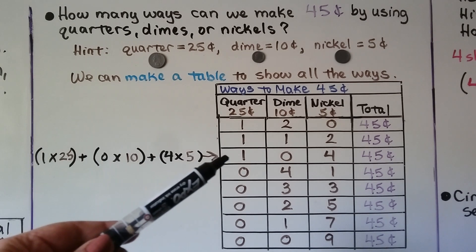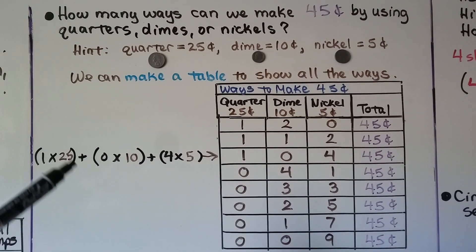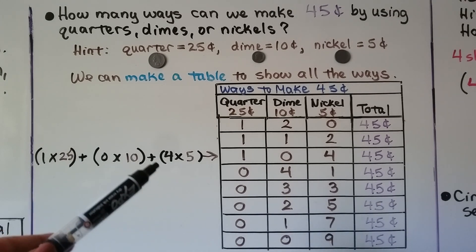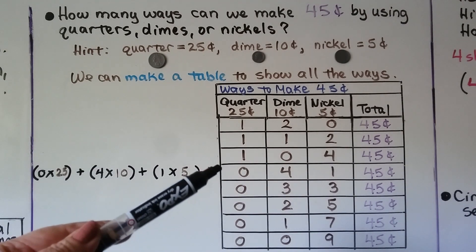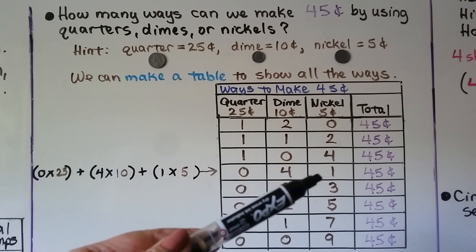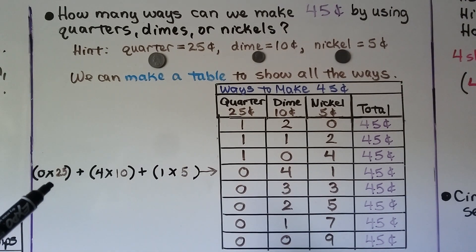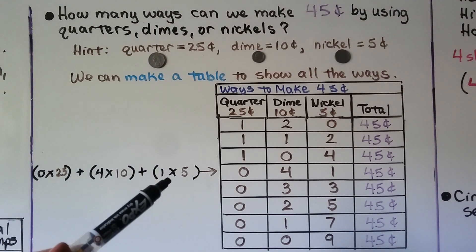We could do one quarter, zero dimes, and four nickels: one times 25, plus zero times 10, plus four times five, and that would equal 45. We could do zero quarters and just use dimes and nickels — four dimes and one nickel: zero times 25, plus four times 10, plus one times five — that would be 45 cents.